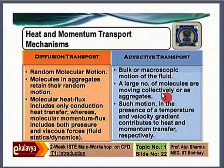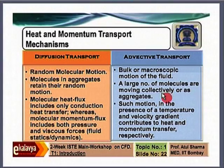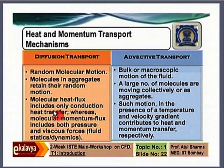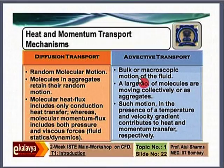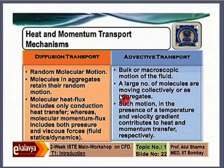These are the two drivers — random molecular motion giving rise to bulk motion, and bulk motion where a large number of molecules move collectively as aggregates. What is the passenger? What is transferred during this process? In energy transport, random motion of molecules transfers what we call conduction heat transfer, whereas in advective transport, bulk motion of molecules transports what we call enthalpy transport. So there are two transports in heat transfer: conduction heat transfer by random motion of molecules, and enthalpy transport by bulk motion.